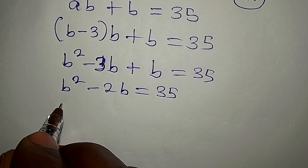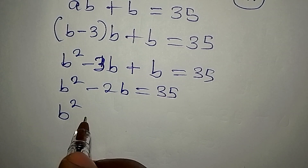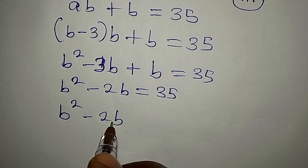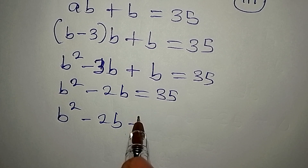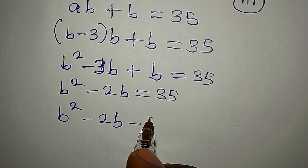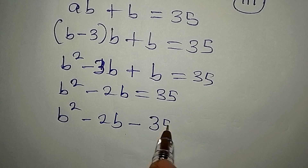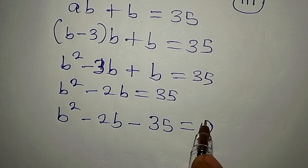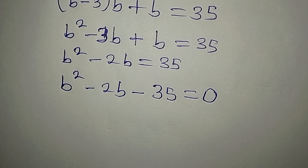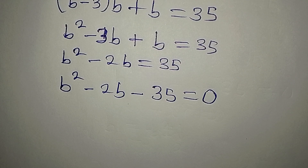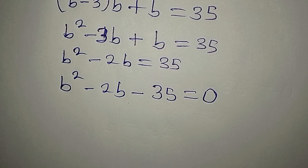We have B squared minus 2B equals 35, because minus 3B plus B gives minus 2B. Bringing 35 to the left gives us B squared minus 2B minus 35 equals zero. We now have a quadratic equation and can decide to solve it using any method.